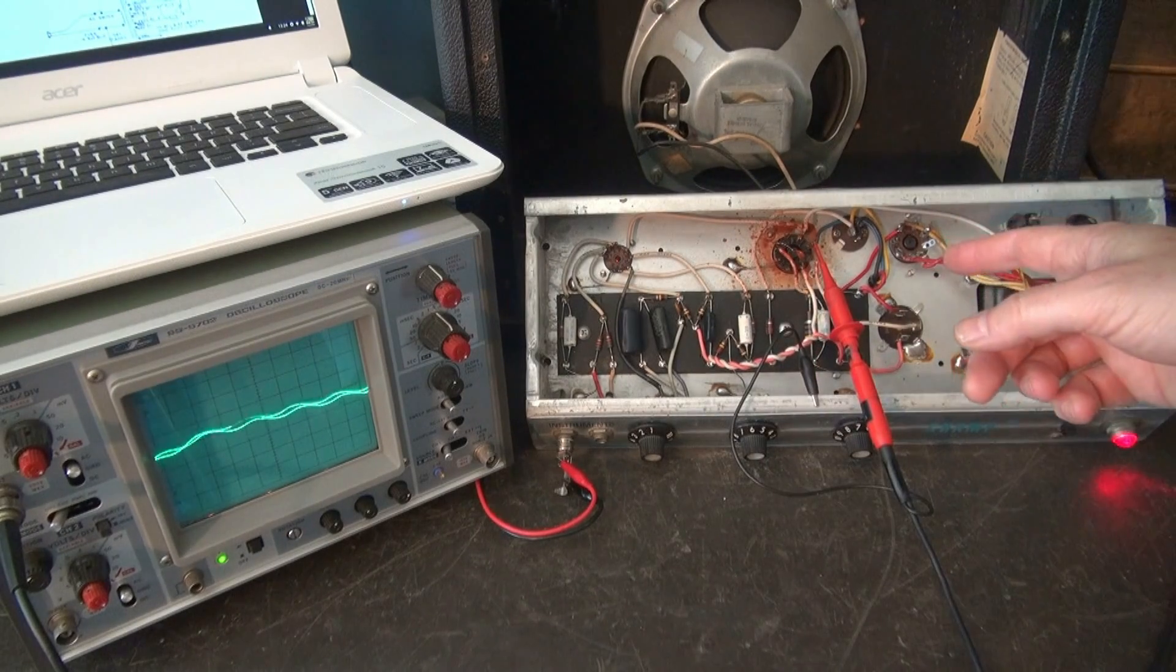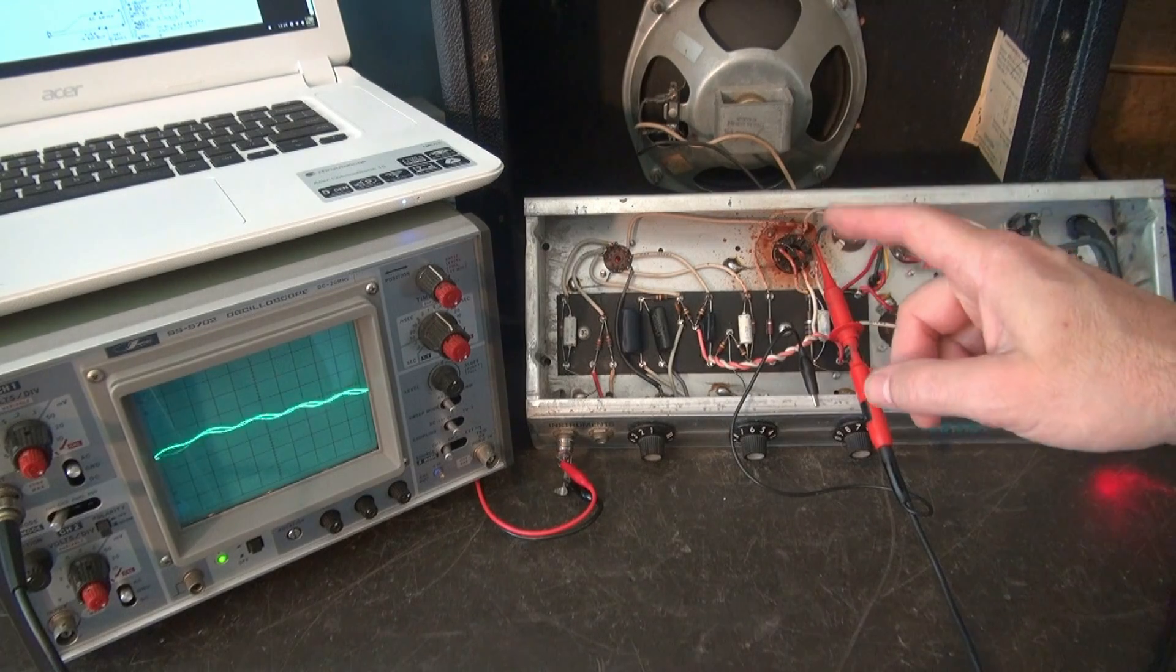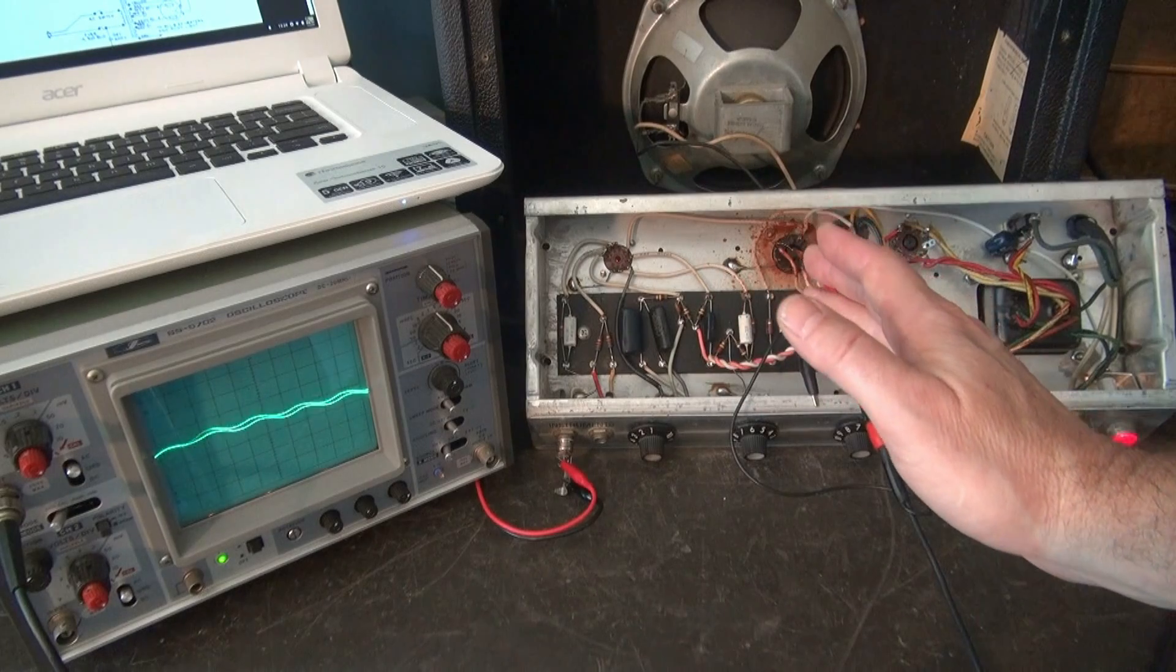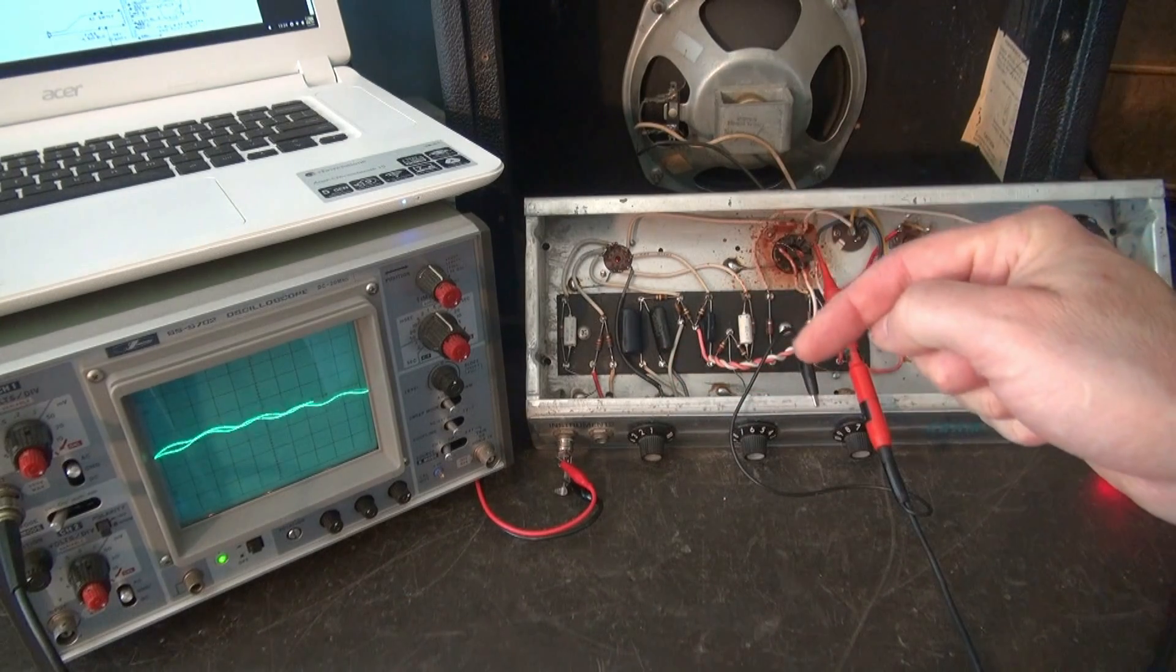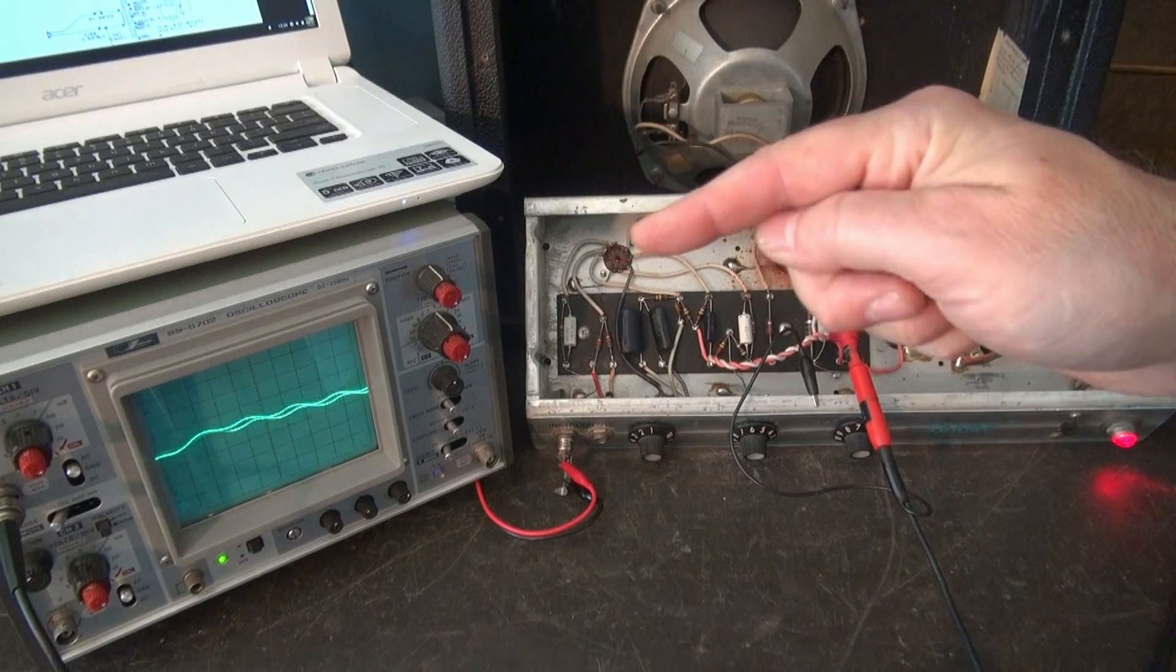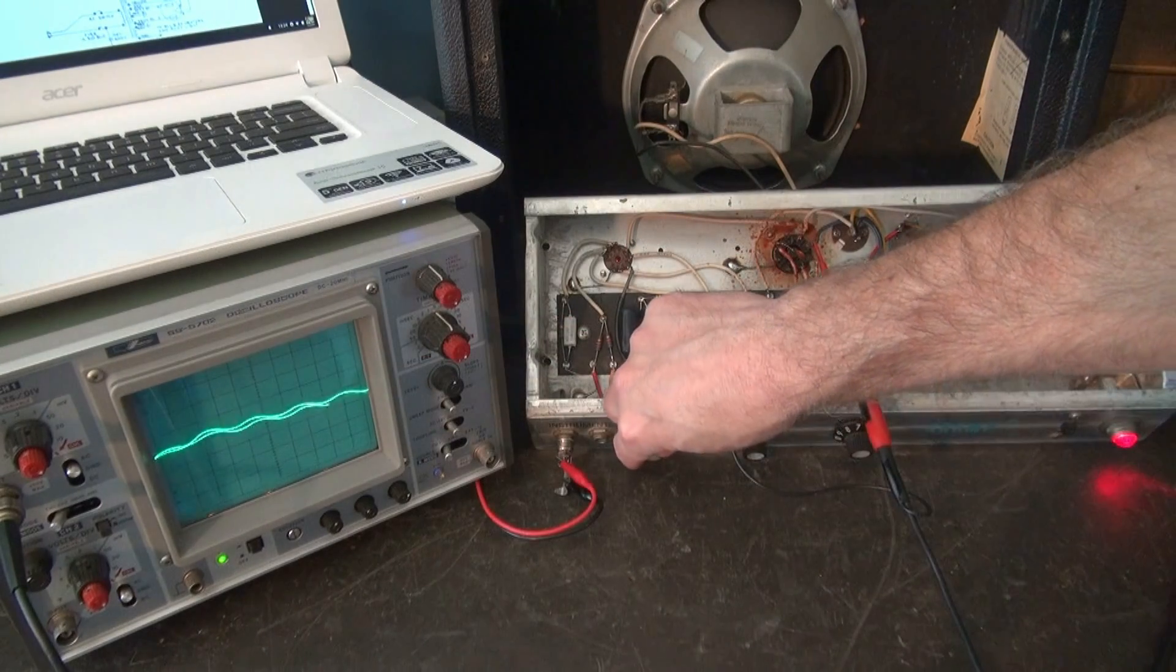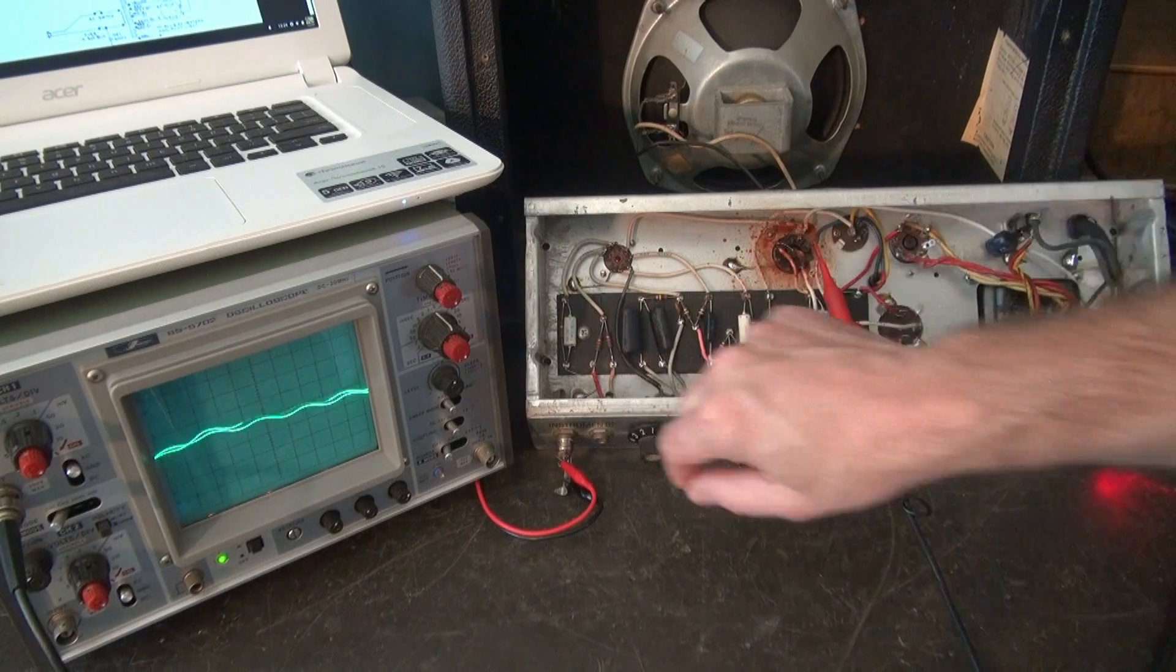Now I've moved my probe to the output transformer lead, which is on pin 5 of the 6V6. Now, you can see this looks all weird. Well, that's because that signal is not referenced to ground. Remember, that's the B plus high side going through the transformer to the 6V6. So it is going to look weird. But the question is, is there a signal? Yes. Lots of it.